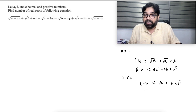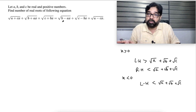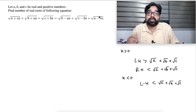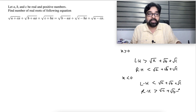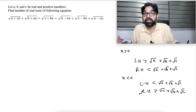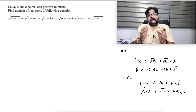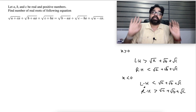And the right-hand side: x is negative, so minus x will become positive. So this will be bigger than √B, this will be bigger than √C, this is bigger than √A. Means the right-hand side is bigger than √A + √B + √C. This is also impossible. Means x is neither less than 0 nor greater than 0.